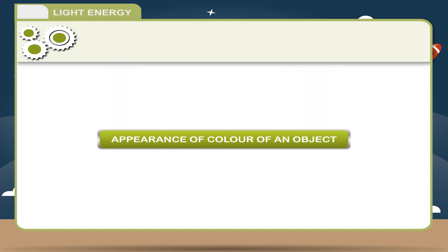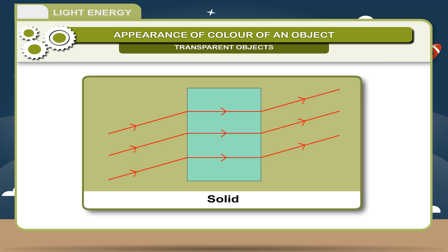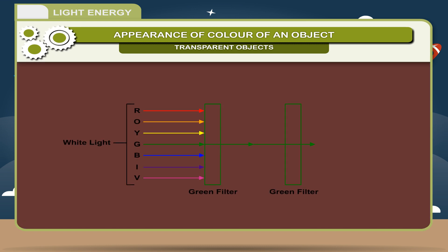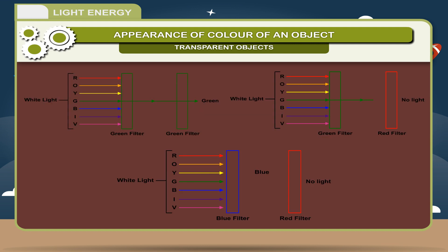Appearance of Color of an Object: An object has no color of its own. For transparent objects: transparent solids and liquids owe their color to the constituents of white light transmitted by them. A green filter absorbs all other colors except green, which it transmits. This green is again transmitted by a second green filter but is stopped by red. If the first filter is blue and the second is red, no light will pass through. This property is known as selective transmission.